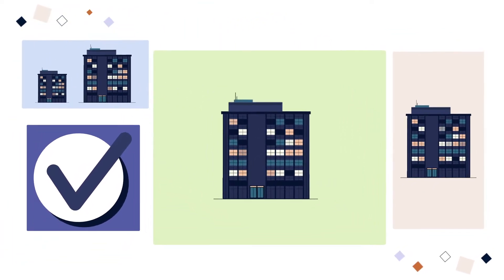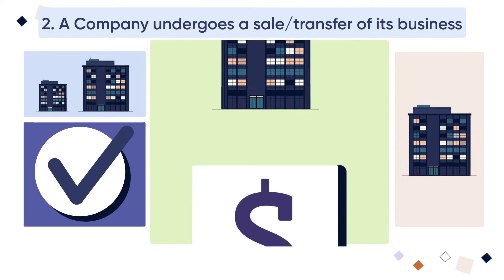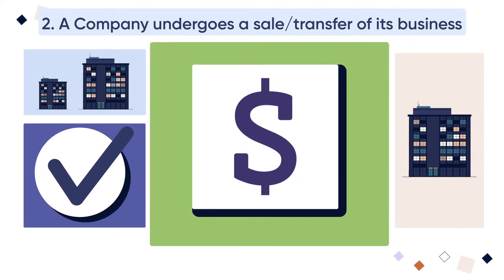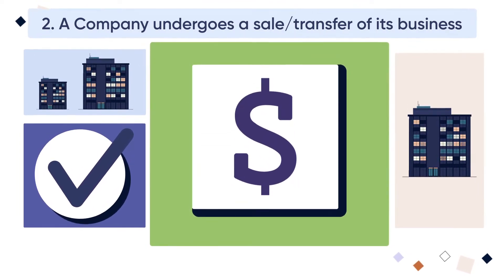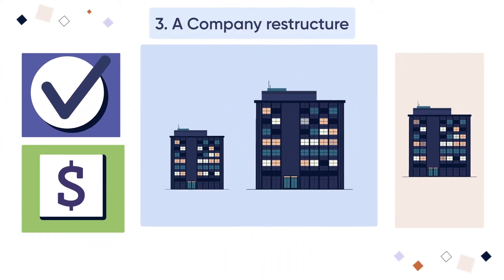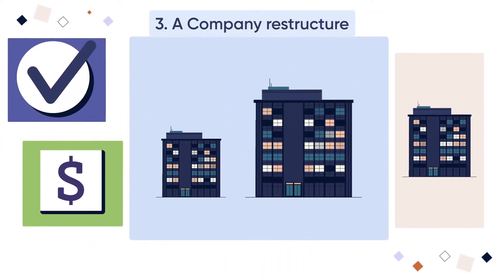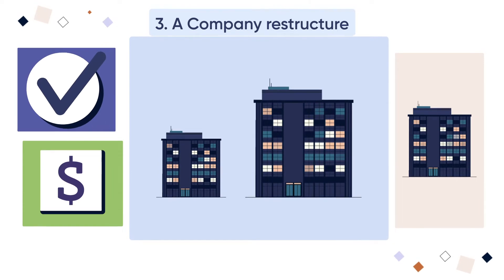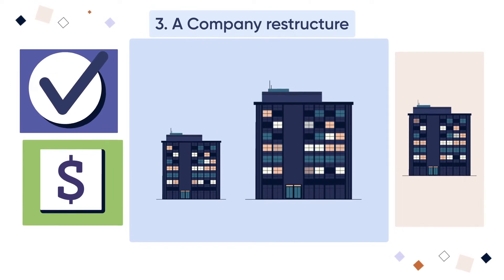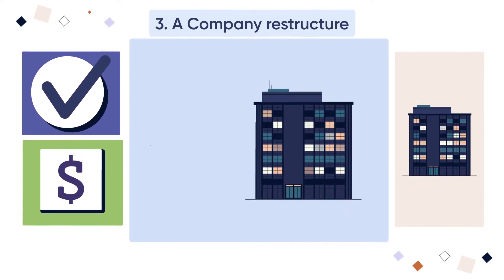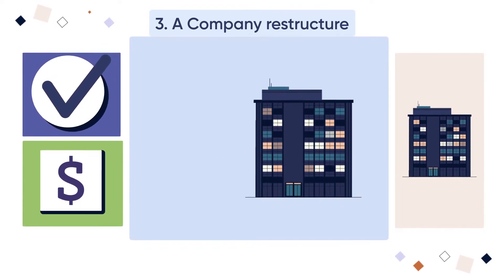Second, a company undergoes a sale or transfer of its business and is no longer required to exist for that purpose. Third, a company restructure — the company may be part of a bigger group of companies and, due to a restructure, is no longer required for any other purpose.